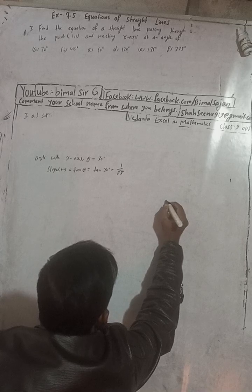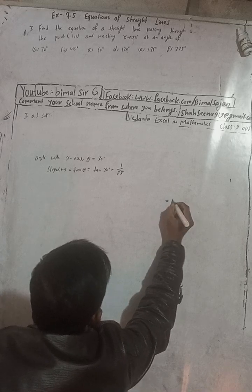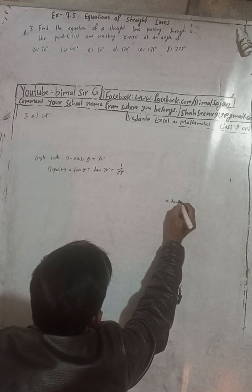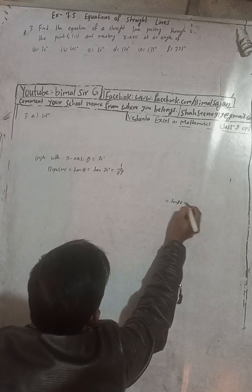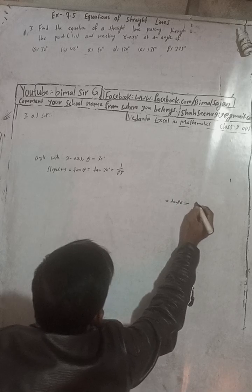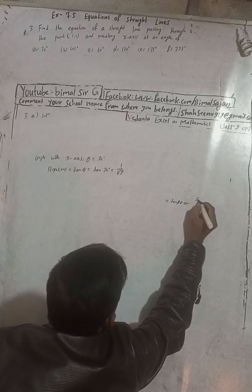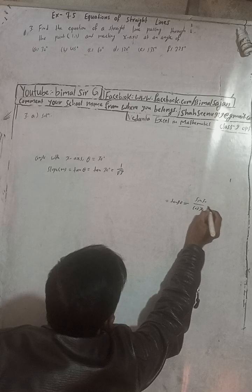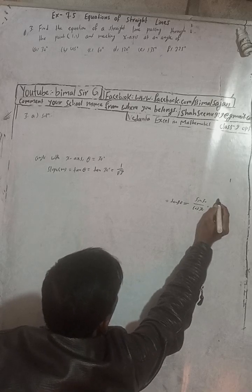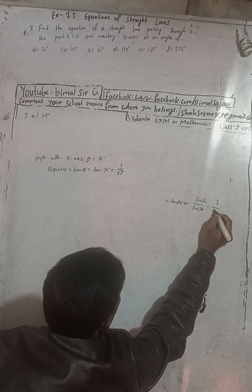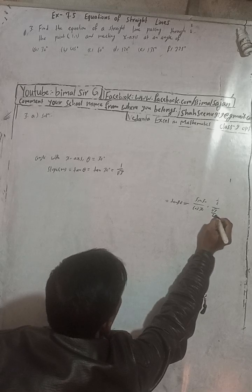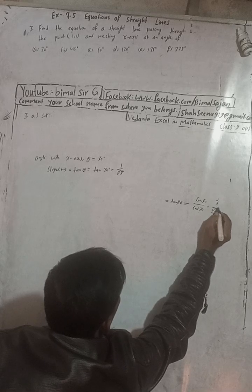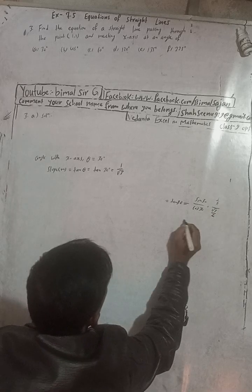If you are confused about the tan 30 value, you can find it as: tan 30 equals sin 30 divided by cos 30. Sin 30 equals 1/2 and cos 30 equals root 3 by 2, so the 2s cancel and tan 30 equals 1 by root 3.